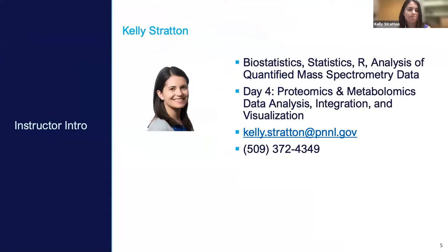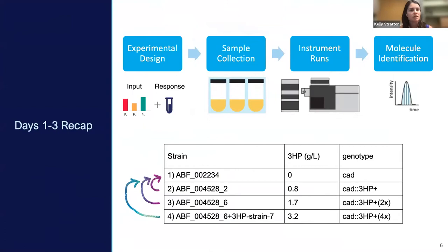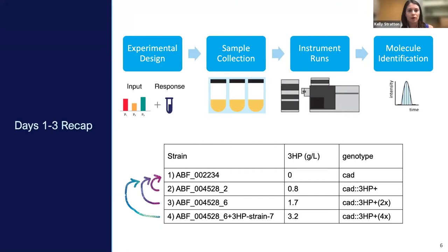As a quick recap for days one through three, you should have heard about experimental design, sample collection, instrument runs, and molecule identification. Throughout this week we've been using an example dataset from the Agile BioFoundry. This table summarizes the four different strains in that experiment. As statisticians and data scientists, we'll be comparing each of strains two, three, and four back to base strain one to see what biomolecules are differentially expressed or present between the different genotypes.